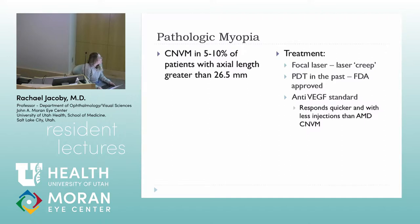Pathologic myopia is a more common cause than angioid streaks for CNVMs. We see it quite frequently in patients with an axial length greater than 26.5 millimeters. The nice thing about myopic CNVMs is they respond pretty quickly to anti-VEGF agents and often don't need as many or as frequent injections.